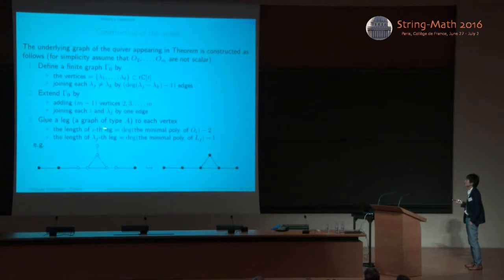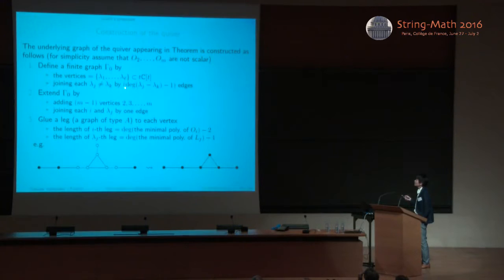Finally, glue a leg, namely a graph of type A, to each vertex. So the length is given by this condition. So this figure is an example here. Gamma zero is just a triangle. So if the gamma zero has three vertices and each difference has degree 2, then gamma zero is given by a triangle. And in this example, we set m equal to one.